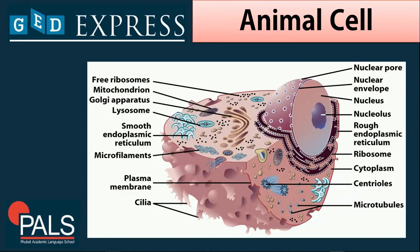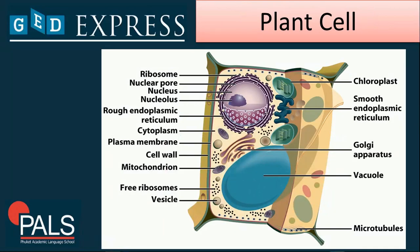For the animal cell, you can see the different parts: free ribosomes, the mitochondrion, the Golgi apparatus, the lysosome, the endoplasmic reticulum, and many other organelles, which I will discuss on the next slide. We also have the plant cell. The main difference from an animal cell is that a plant cell has a thick cell wall, which protects the cell and controls what goes in and out.